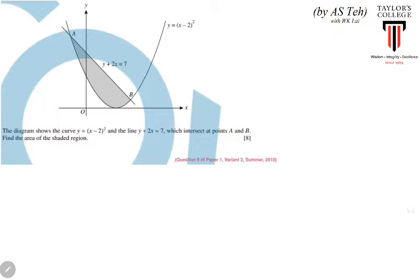This is a partial question from the summer paper of 2010. We are given two functions: a line function y + 2x = 7, and a curve y = (x - 2)². We need to find the area of the shaded region. We can do that using integrals - finding the area bounded by the x-axis and the line graph, then subtracting the area bounded by the curve.